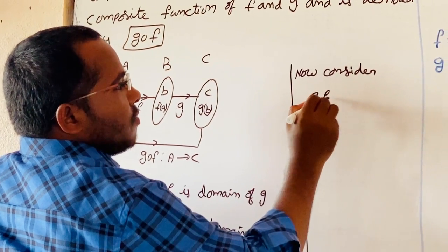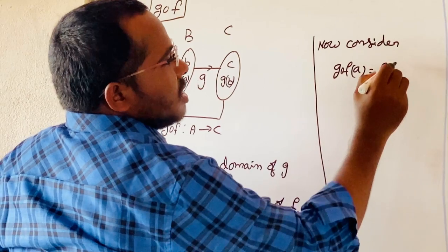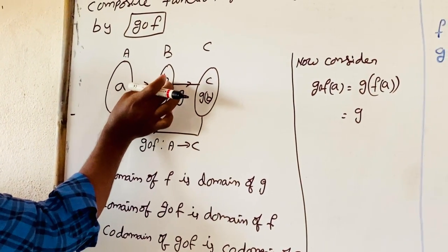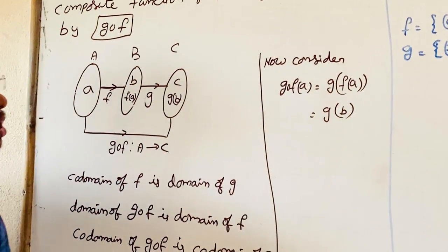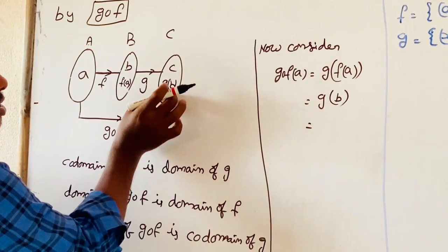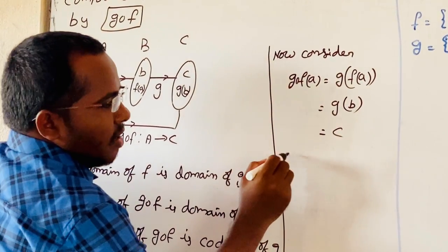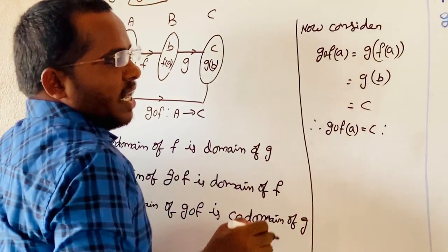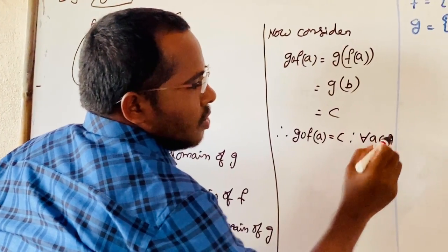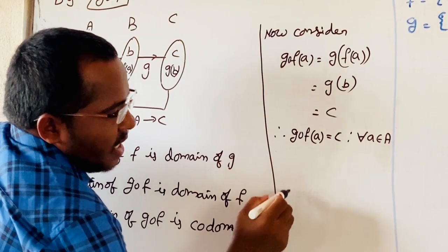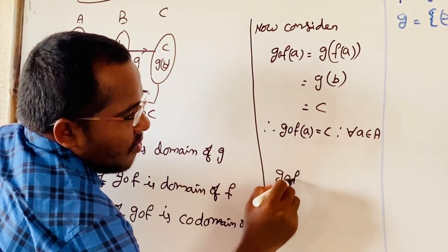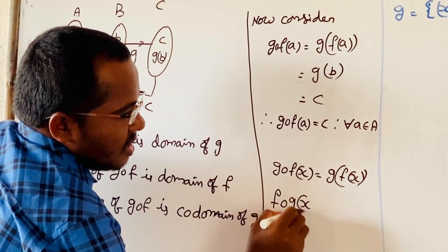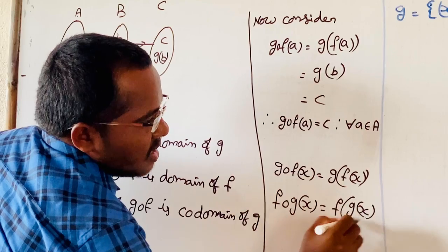Now, G circle F of a equals G of F of a. F of a is equal to b, so that equals G of b, and G of b value is c. Therefore G circle F of a equals c, for all a belonging to A. We write: G circle F of x equals G of F of x. Similarly, F circle G of x is written as F of G of x.